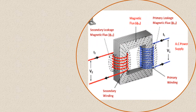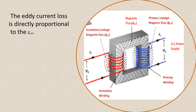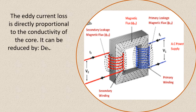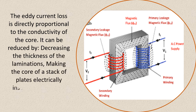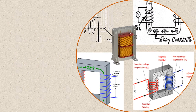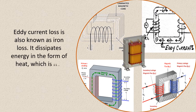The eddy current loss is directly proportional to the conductivity of the core. It can be reduced by decreasing the thickness of the laminations, making the core a stack of plates electrically insulated from each other. Eddy current loss is also known as iron loss. It dissipates energy in the form of heat, which is not utilized for any useful work.